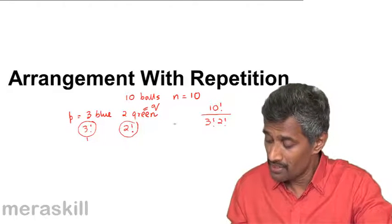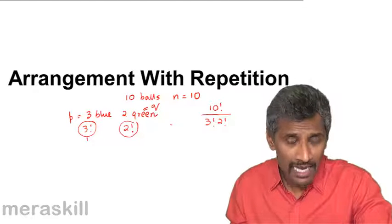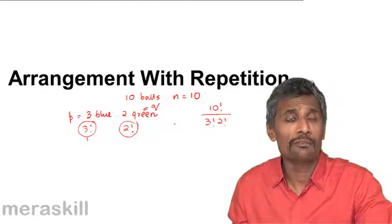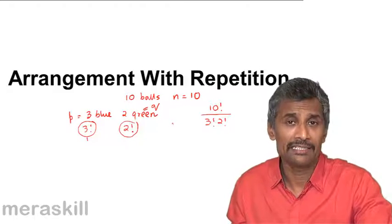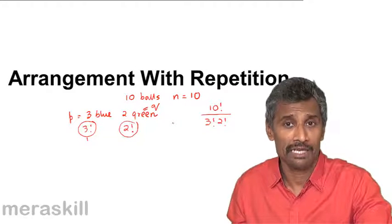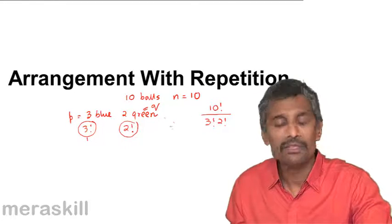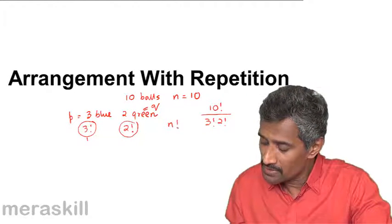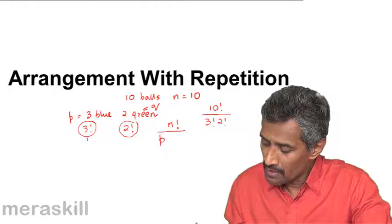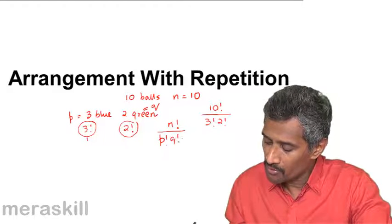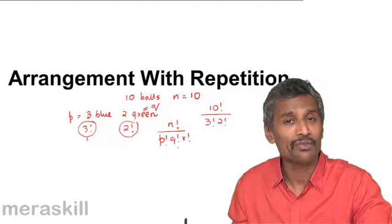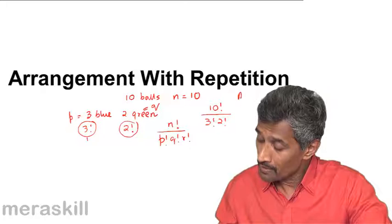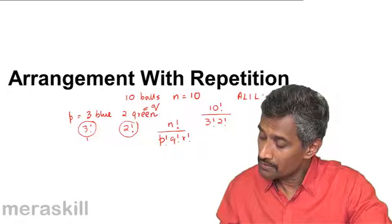In general, if there are n items out of which p are of one kind (exactly identical), q are of another kind, r are of another kind, and so on, with the remaining being of different kinds, then the total number of arrangements is n factorial divided by p factorial times q factorial times r factorial.